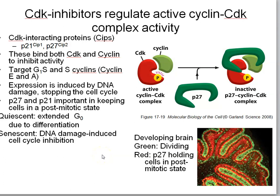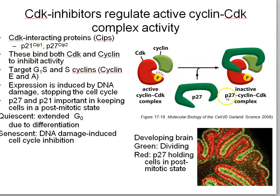p53 also induces p21 expression, and p21 is a cyclin-dependent kinase inhibitory protein. Cyclin-dependent kinases bind to cyclins. At the G1/S boundary, this involves cyclin E and CDK2. Even when cyclin E is present and CDK2 is active, overexpression of p21 — which is structurally similar to p27 — will bind to this complex and inactivate cyclin-dependent kinase activity, stopping the cell from progressing through the restriction point.